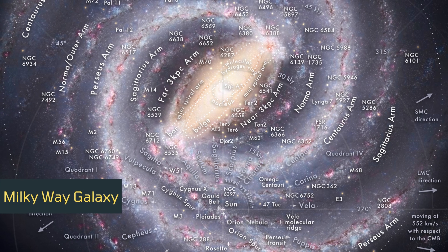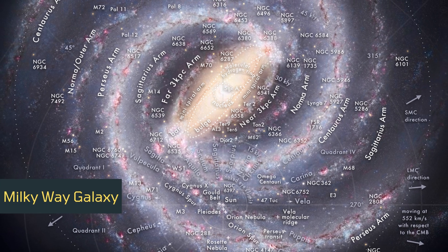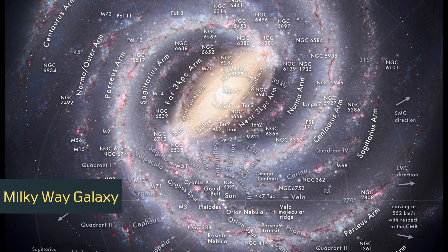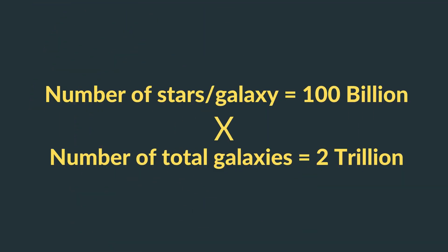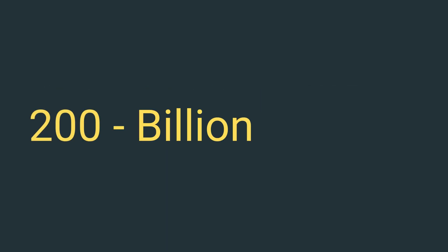Astronomers assume that the Milky Way is a very typical galaxy and the stars it contains are an average number of stars that exist within any given galaxy. So if there are 100 billion stars in the Milky Way and 2 trillion galaxies in the observable universe, we simply multiply 100 billion by 2 trillion to estimate the number of stars in the universe. The number we get is 200 billion trillion.